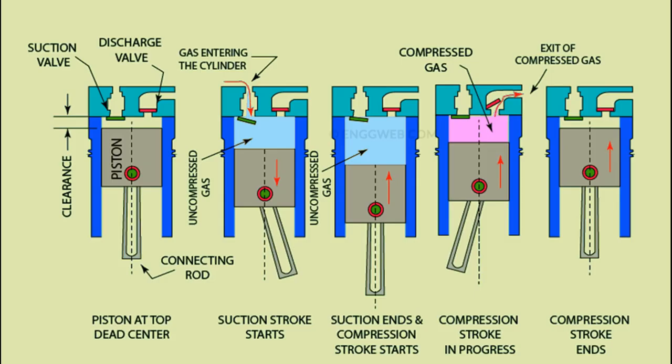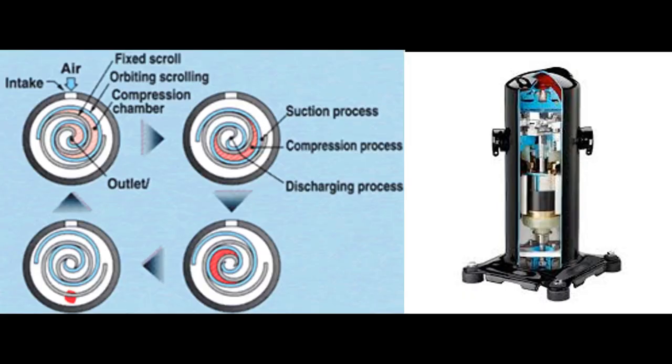A reciprocating compressor works by moving a piston in a cylinder via a connecting rod and crankshaft. If only one side of the piston is used for compression, it is described as single acting. If both sides of the piston — top and underside — are employed during the up and down stroke, it is defined as double acting. A scroll compressor has one fixed scroll which remains stationary and another moving or orbiting scroll that rotates through the use of a swing link, slowly pushing pockets of refrigerant toward the center, reducing the volume of the gas.